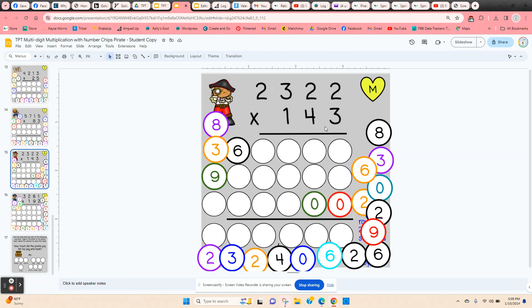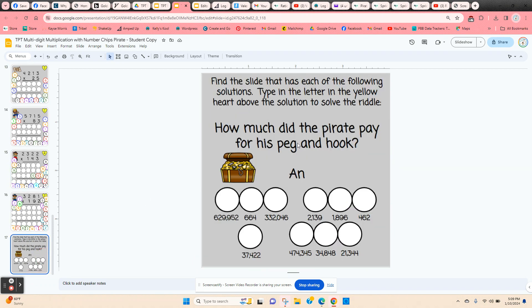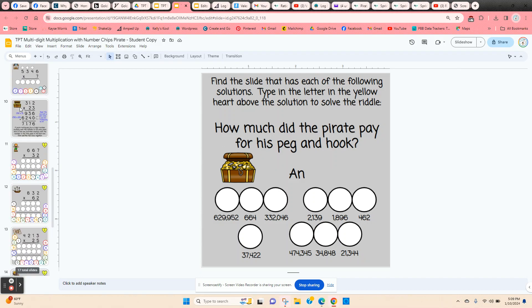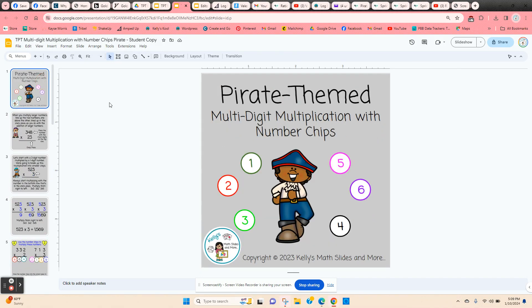Then they get into multiplying a four digit by a three digit. When they do that, that third row of multiplication—since they're multiplying times 100—this row has to start with two zeros. Now when they get to that very last slide, they're going to have a pirate riddle, and it'll be solved by finding these solutions on the previous slides. Then they're going to take the letter that's in the yellow heart and type it in the circle. If they did this correctly, it should solve the riddle. This is the pirate themed multi-digit multiplication with number chips.